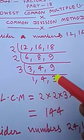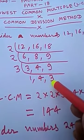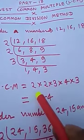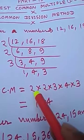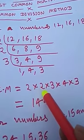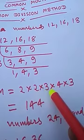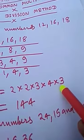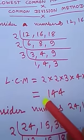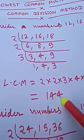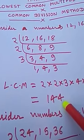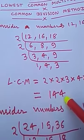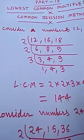The LCM is the product of the divisors and remaining numbers: 2 × 2 × 3 × 4 × 3, which equals 144. So the LCM of 12, 16, and 18 is 144.